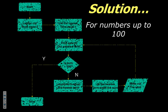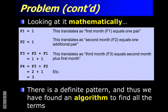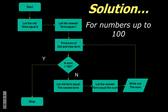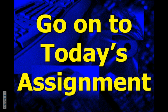If you wanted to write a computer program to find the first 100 Fibonacci numbers, here's the algorithm as a flowchart: let the old term equal 0, let the new term equal 1. Find the sum of old and new. Is the sum greater than 100? If no: let old equal new, let new equal sum, output the sum, go back and repeat. When the sum is finally greater than 100, stop. This is a more technical example showing how a flowchart visually represents solving the problem — even Fibonacci could have used this tool if he'd had it.